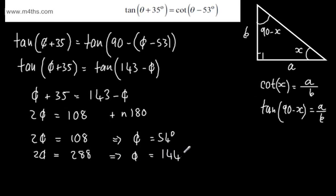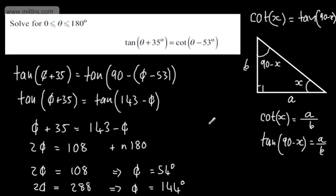An alternative was to find the first solution and then just add multiples of 90 to it. That's one way to tackle the question — using the trig identity, which you can see graphically or verify using the triangle.